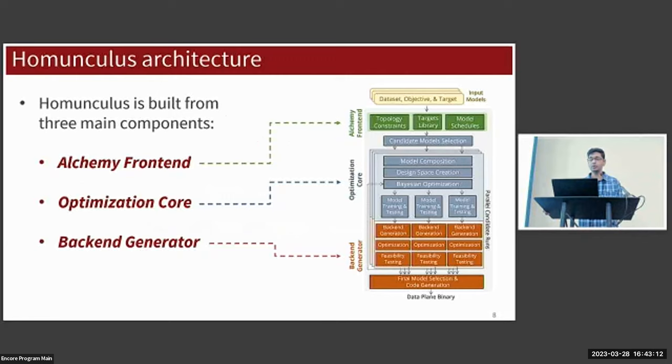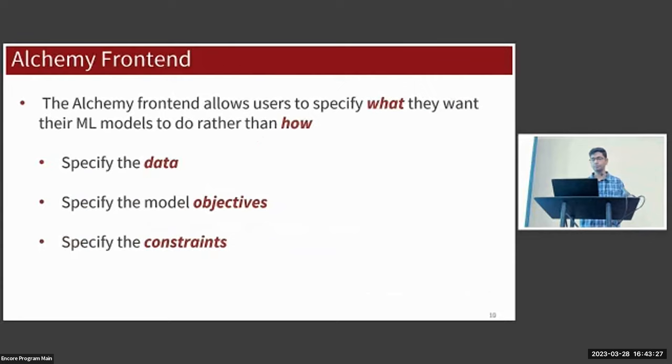Homunculus itself is built from three main components: the Alchemy front-end that lets users write their code, an optimization core that produces ML candidate models, and a backend generator to actually build the candidate models on the data plane platforms. We'll start with the first part, the Alchemy front-end. Alchemy is a framework that's built in Python and it allows users to focus on what they want their models to do rather than how.